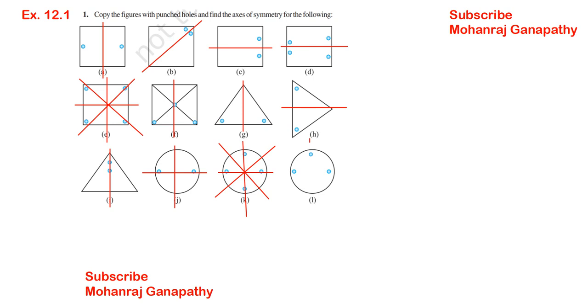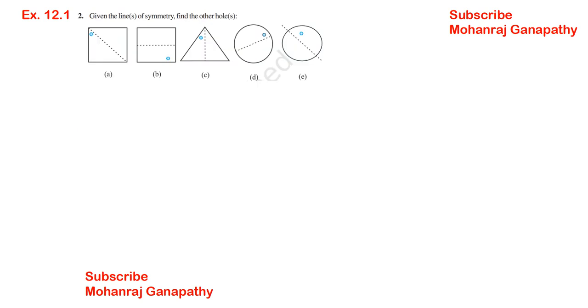The circle — dot at center. Okay, this is a line of symmetry. X is 12.1, sum number 2.